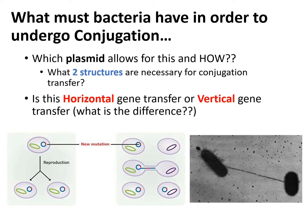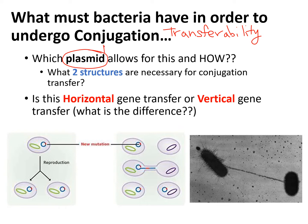Before we get into the details of conjugation, there are a few things you have to know. First, not all bacteria can undergo conjugation. In order to undergo conjugation, bacteria must have what we call transferability — the ability to transfer DNA. The reason these bacteria have transferability is because they have a particular plasmid called the F plasmid, where F stands for fertility. So it's the fertility plasmid.